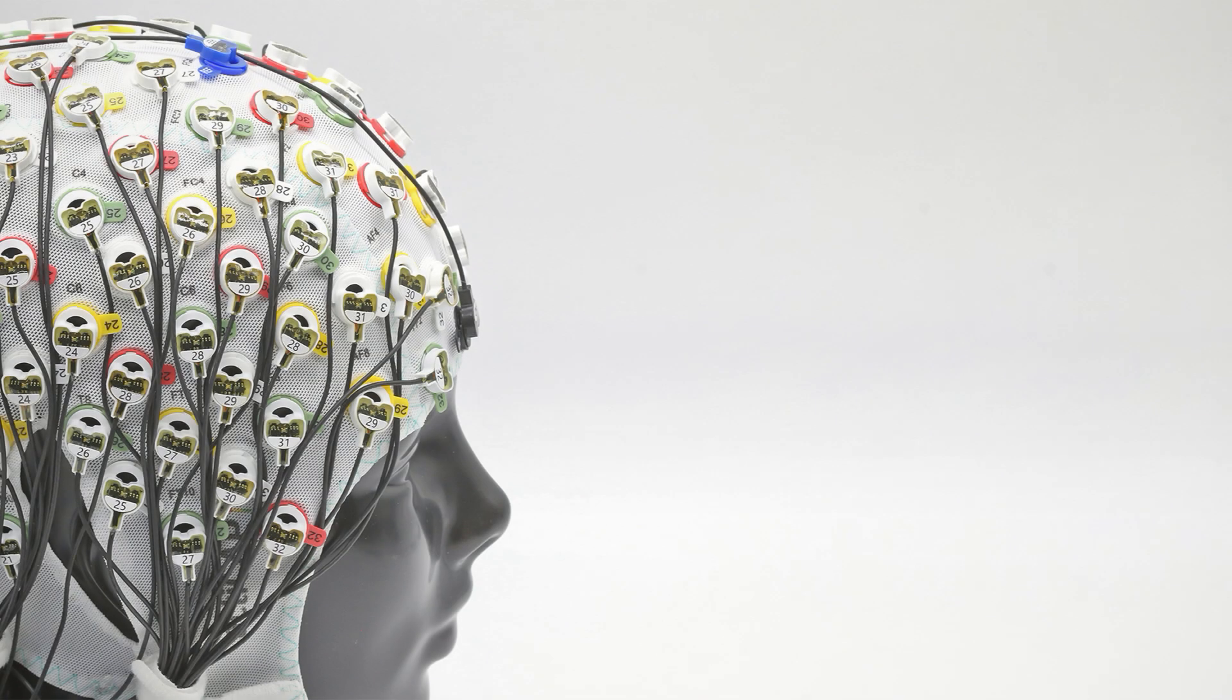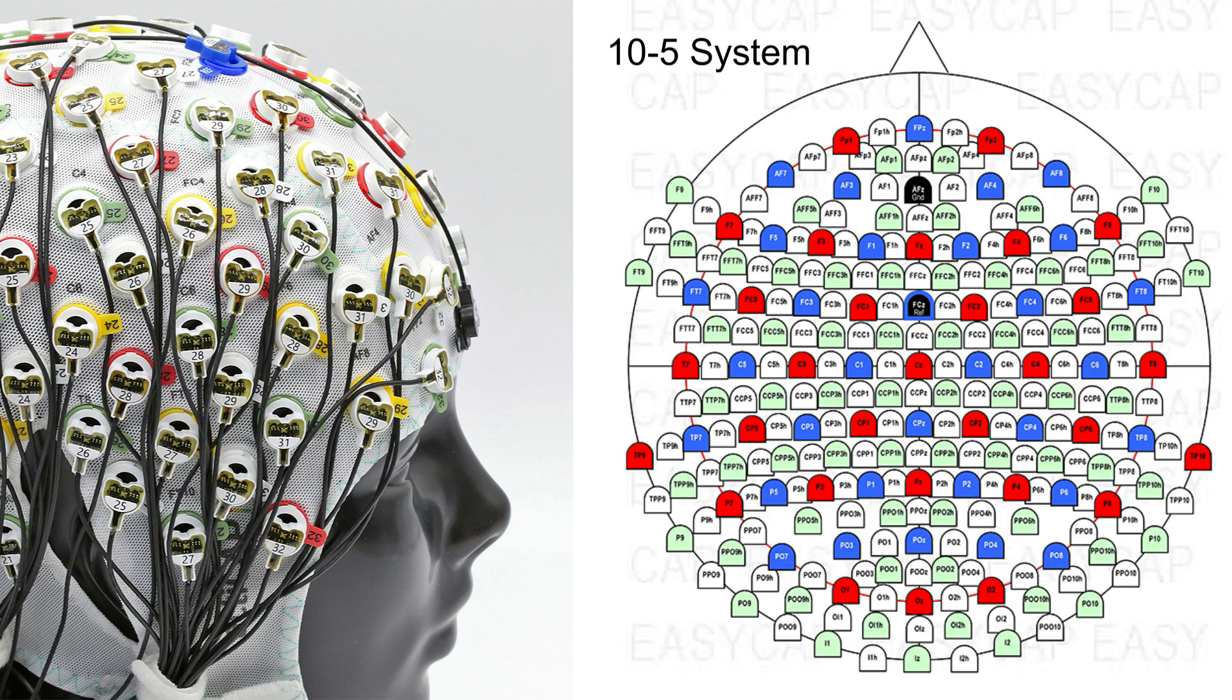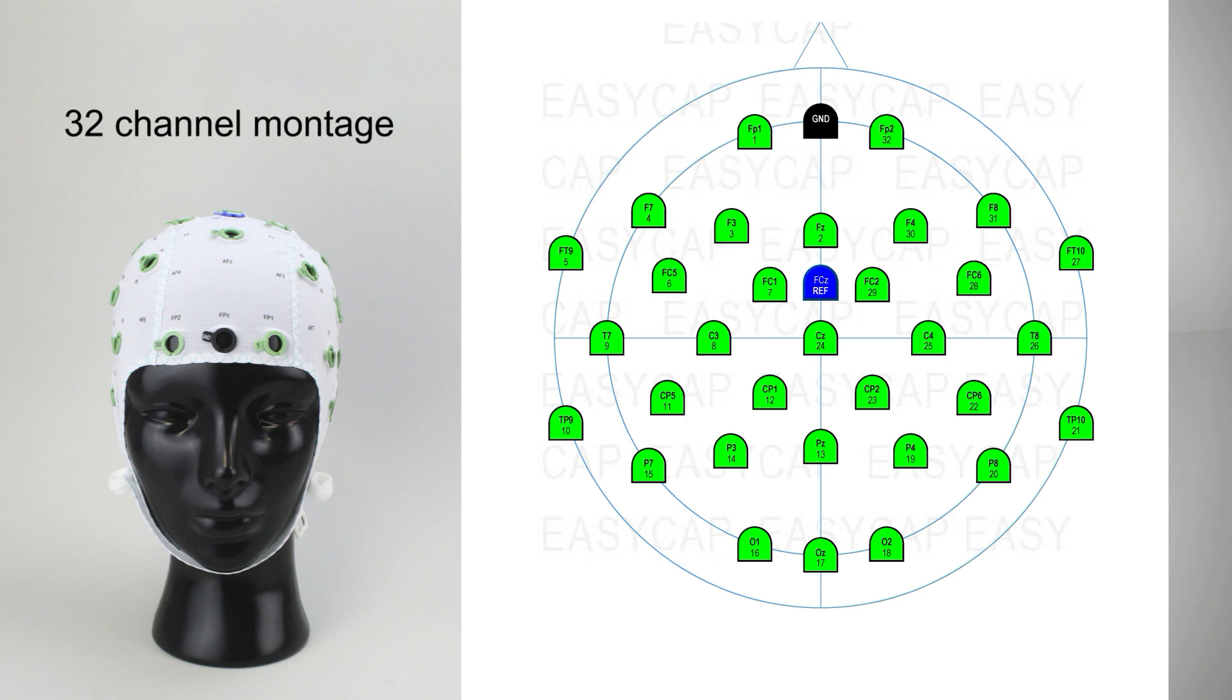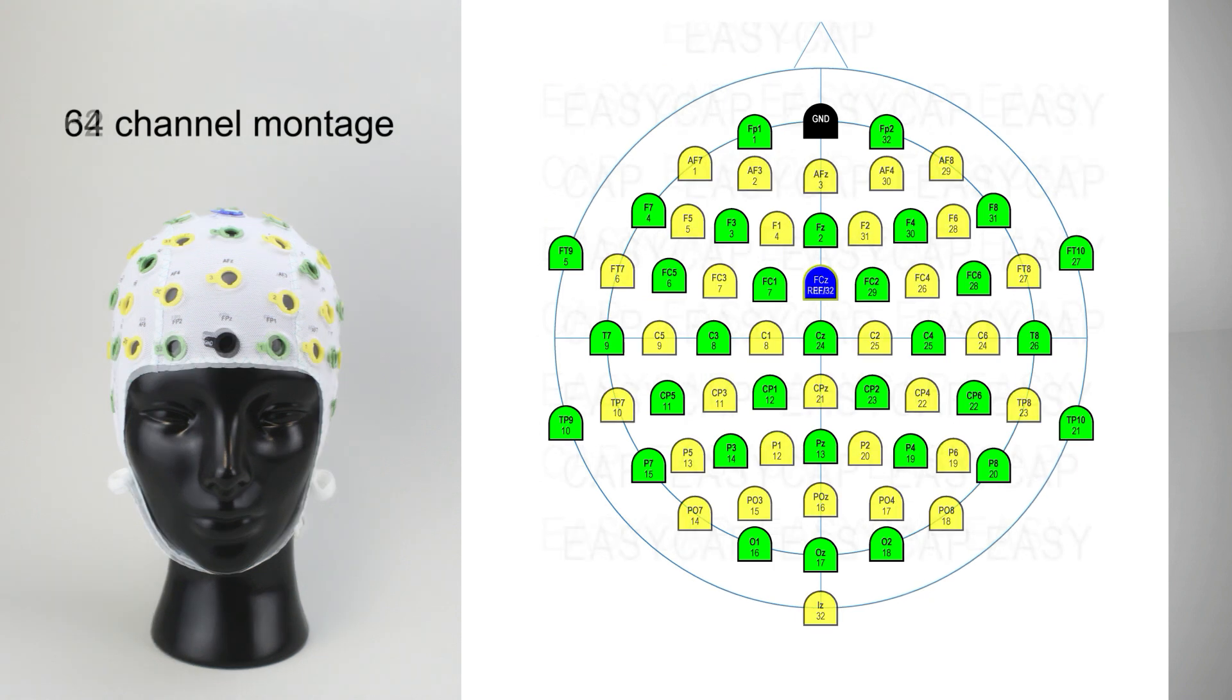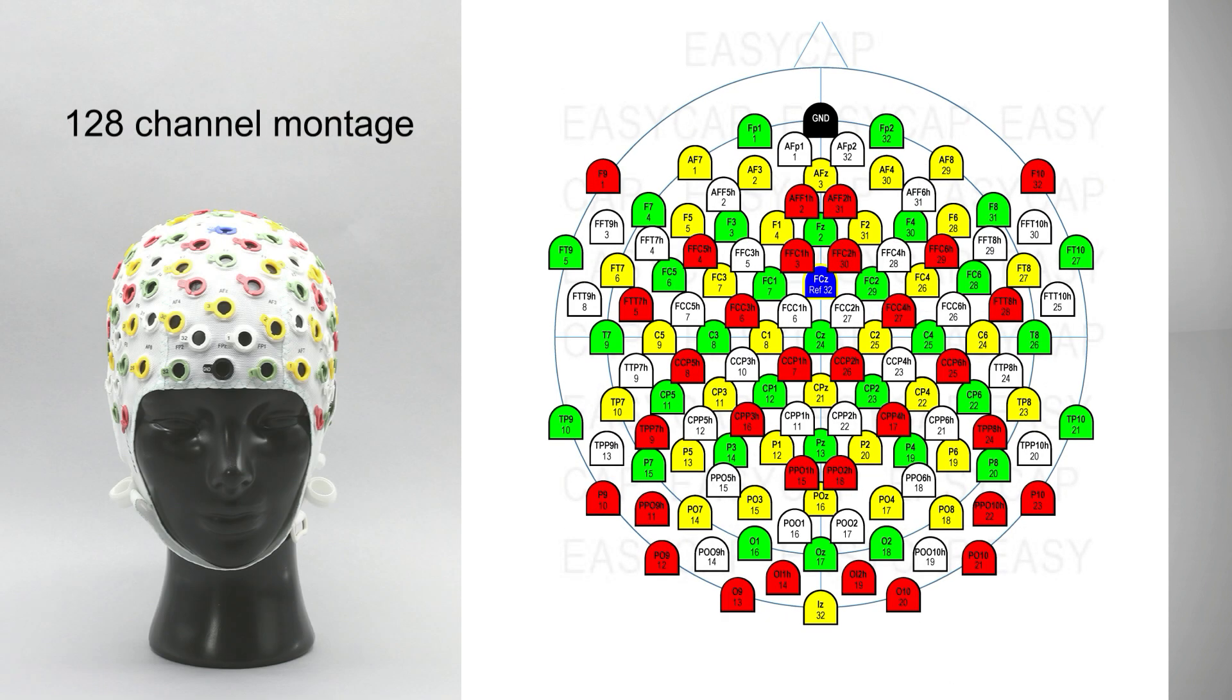Standard ActiCap layouts are designed according to the international 10-20, 10-10 or 10-5 systems. This means that a 32 channel cap already provides full head coverage. Increasing channel numbers will add more density, up to 160 channels.